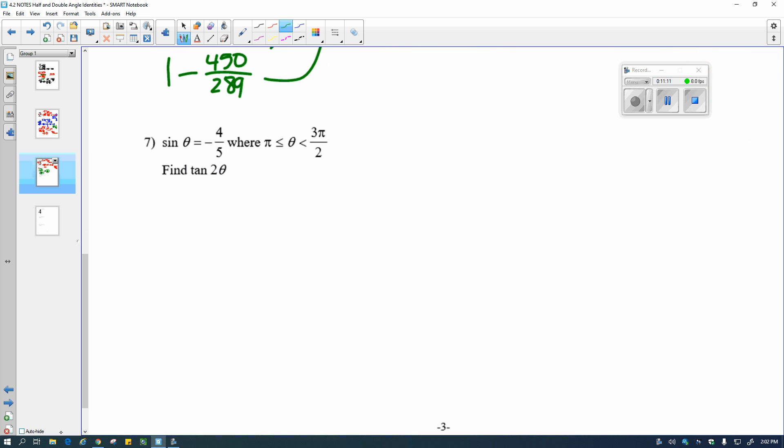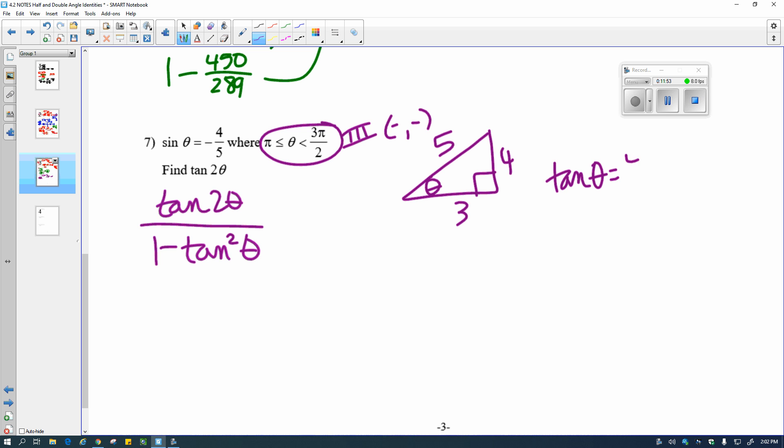And I have the tangent double angle, so I have to figure out the identity that I want to use. And that one is tangent 2 theta over 1 minus tangent squared theta. I have the sine. In order to do this, I need the tangent. I am in the third quadrant, which is negative negative values. That's why the sine is negative. I draw my triangle. Here's my theta, opposite over hypotenuse. A 3, 4, 5 again. And the tangent of theta then is 4 thirds. It is positive because in the third quadrant, the tangent is positive. And that's why they give us this information.